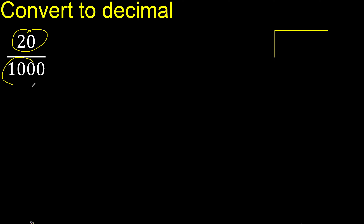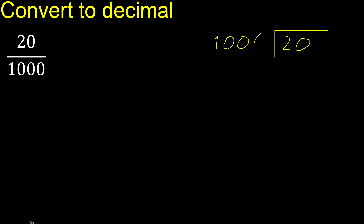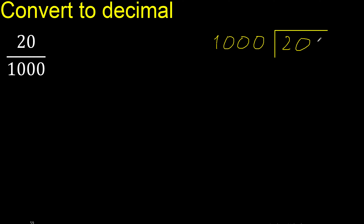20 divided by 1000. 20 is less than 1000, therefore complete — always complete with 0.